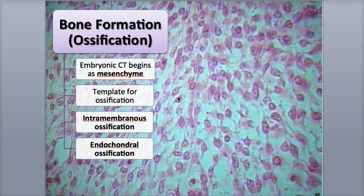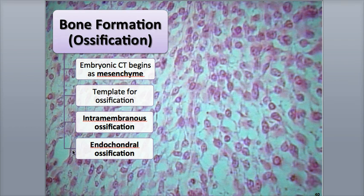Bones can develop in two different ways as the original connective tissues are replaced with bone tissue. The simpler method is called intramembranous ossification, meaning between the membranes, and involves the formation of bone directly within thin, flat, membrane-like layers of mesenchyme. Endochondral ossification, meaning within the cartilage, involves the formation of bone within the hyaline cartilage that originates from the mesenchyme.